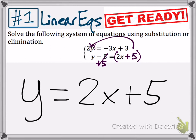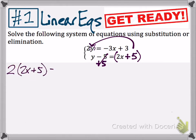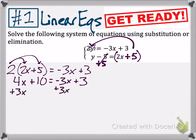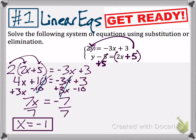The arrow is directing that this expression is going to replace y in the top equation. So instead of y, it now says 2x plus 5 — that is how you do substitution. You would then distribute your 2 and get your x variable alone. I am going to add 3x to both sides, then subtract 10 from both sides, leaving you with 7x equals negative 7. Dividing by 7 gives you x equals negative 1.